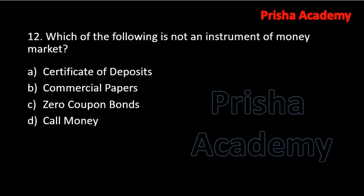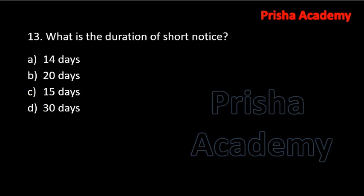Next question: which of the following is not an instrument of money market — certificate of deposits, commercial papers, zero coupon bonds, or call money? The answer should be zero coupon bonds, because zero coupon bonds are of long durations. All others are short-duration products and are part of the money market.